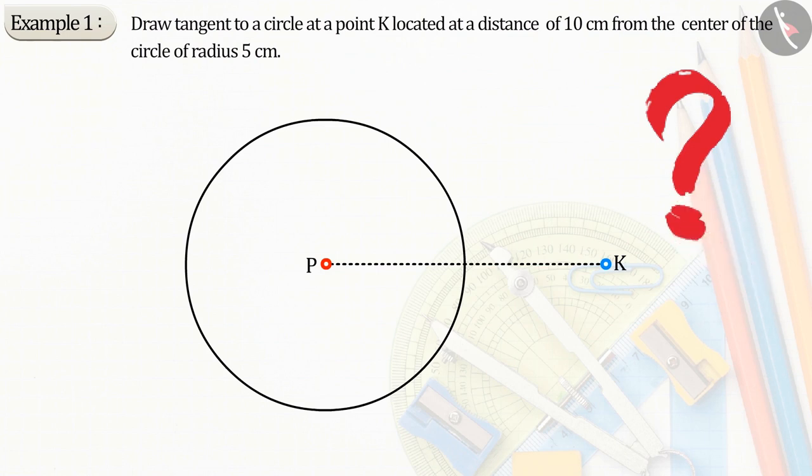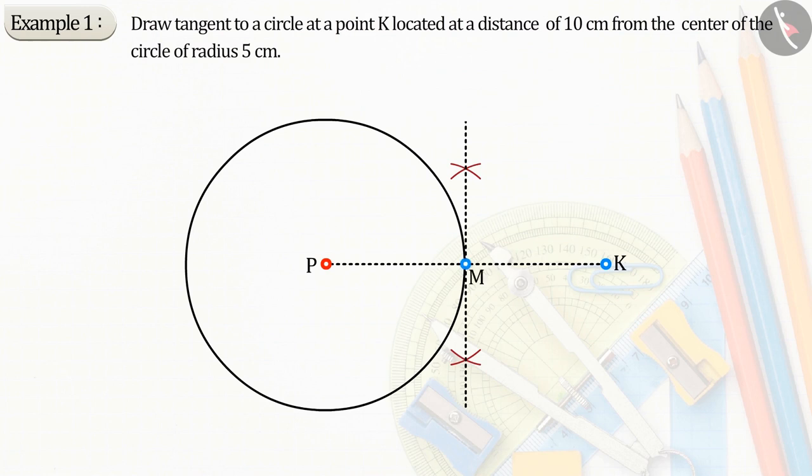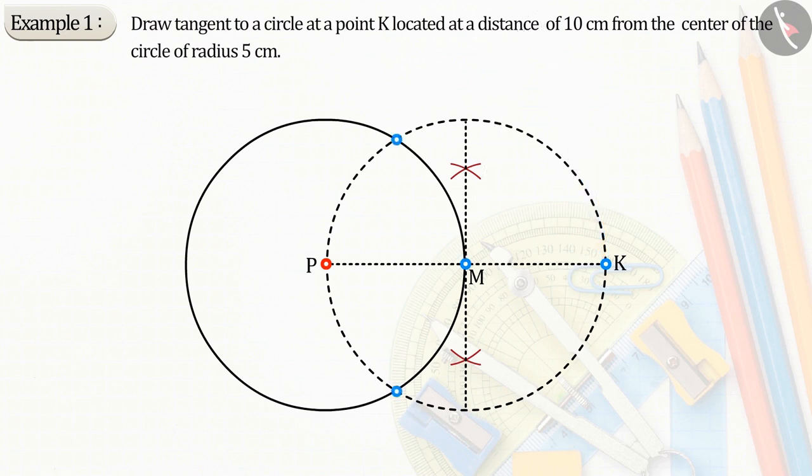Can you tell what step we should take next? Now we will bisect the line segment PK from which we get the midpoint M of the line segment PK. Now let PM or MK be the radius. Let's draw a circle from the point M which intersects the first circle at point S and T.